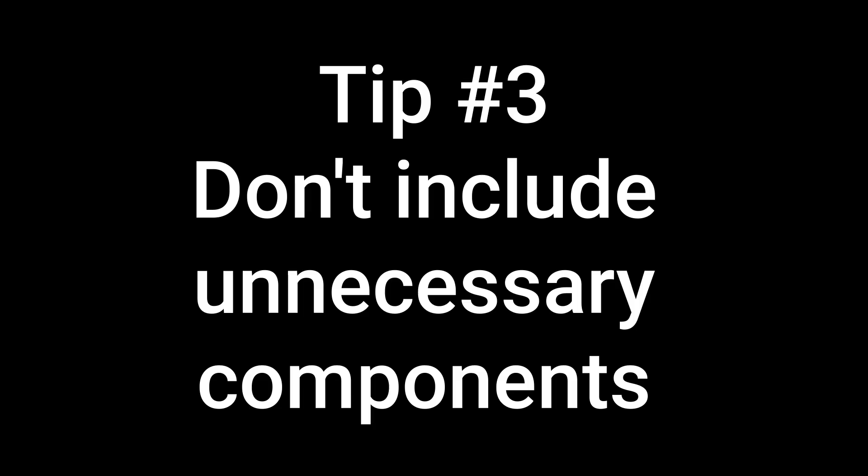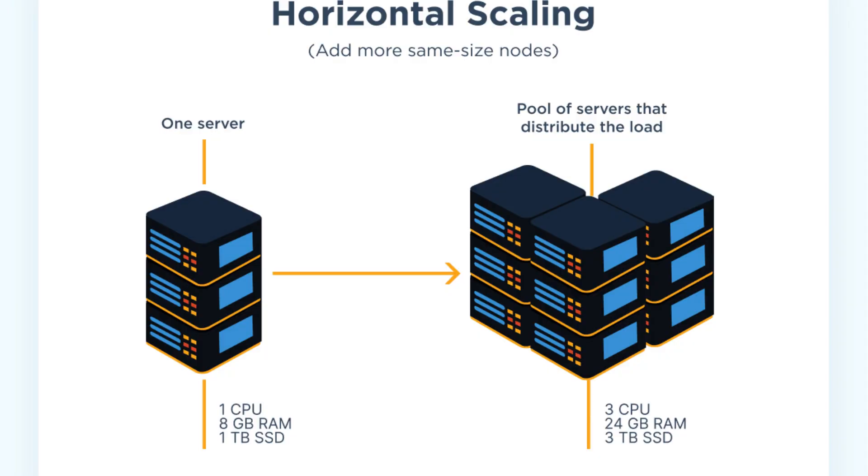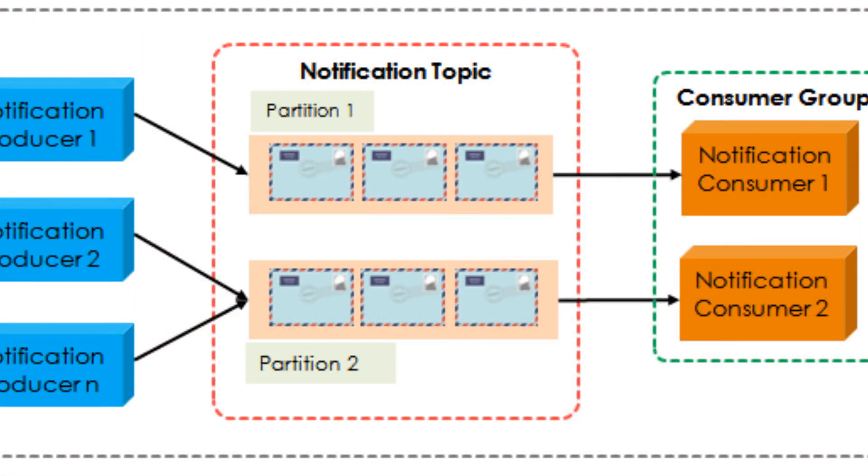Tip number three is about not introducing anything that was not required. A frequent mistake is that engineers apply tactics like horizontal scaling, caches, or queues just because they had some experience with a particular technology. For example, engineers might say 'I would use Kafka here' without understanding if they actually need it. Don't use any technology just because you have experience with it — every choice should be justified. If you need a queue because you need to reliably send messages to several consumers, then Kafka can be a good choice, but if there's no such requirement, just don't do it.